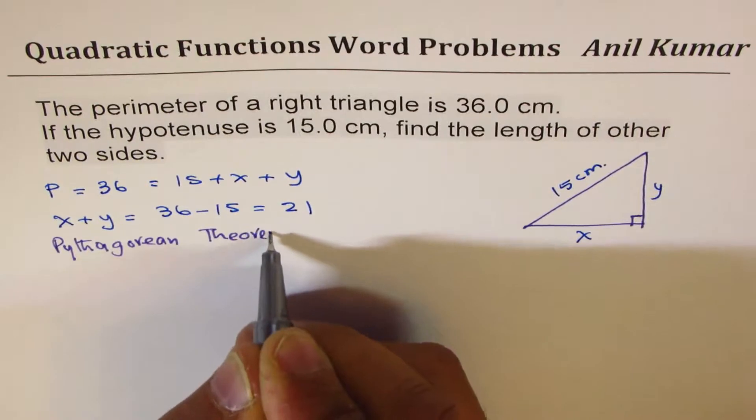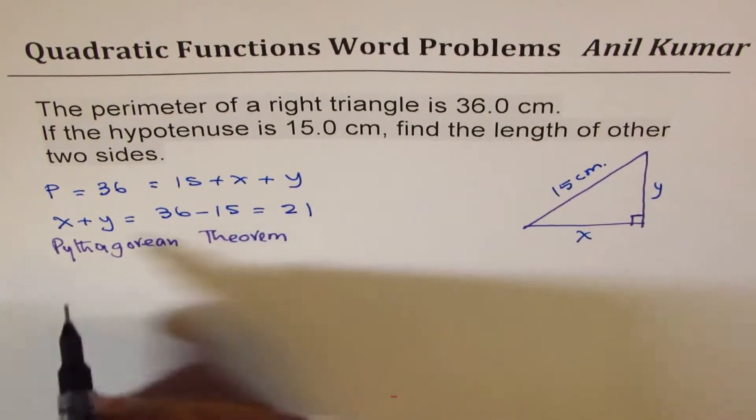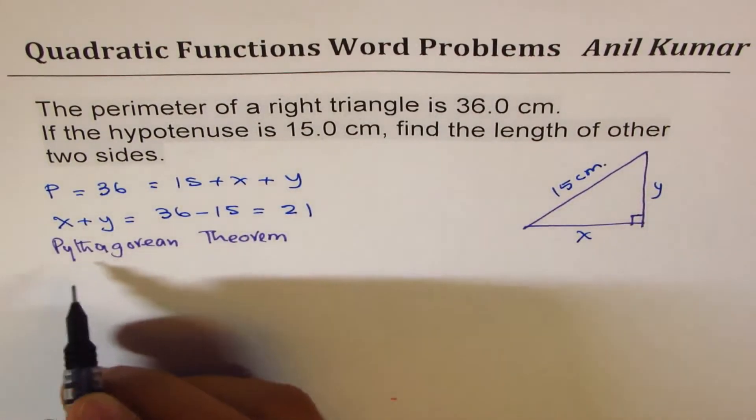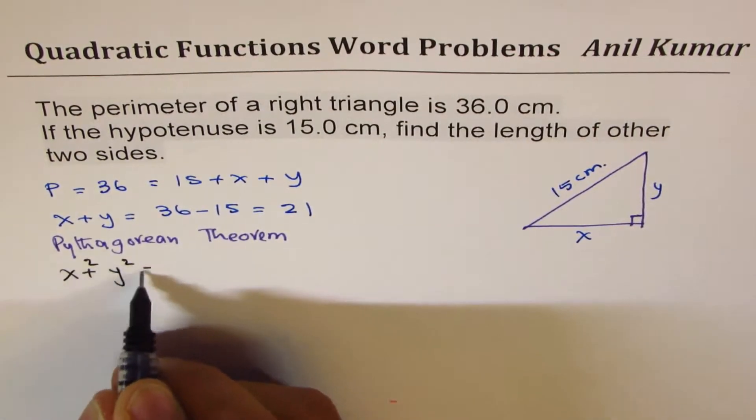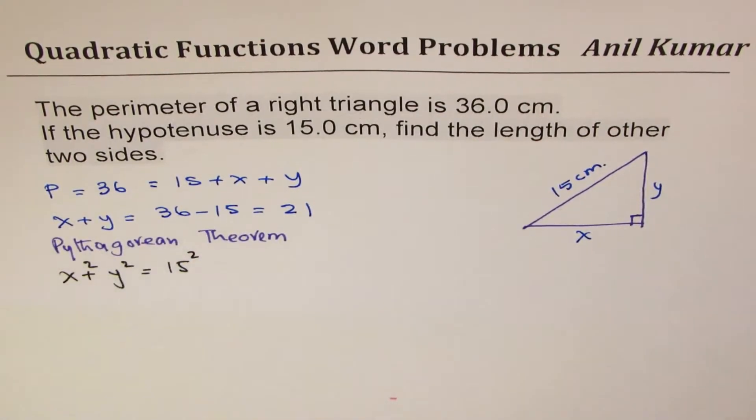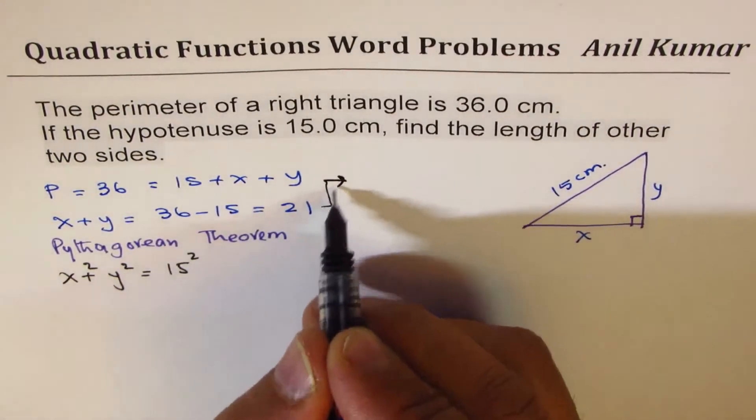Since there are two variables we need two equations, right? So what we will do here is we'll write X square plus Y square as 15 square using Pythagorean theorem. X plus Y is 21.